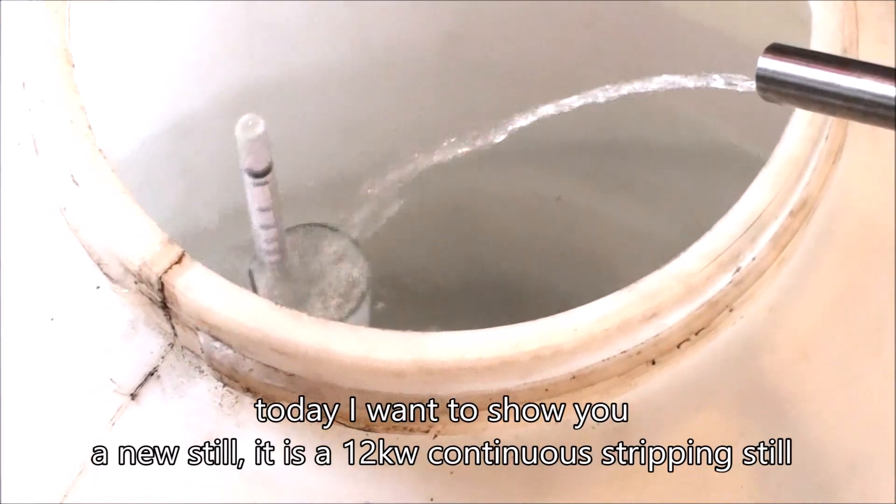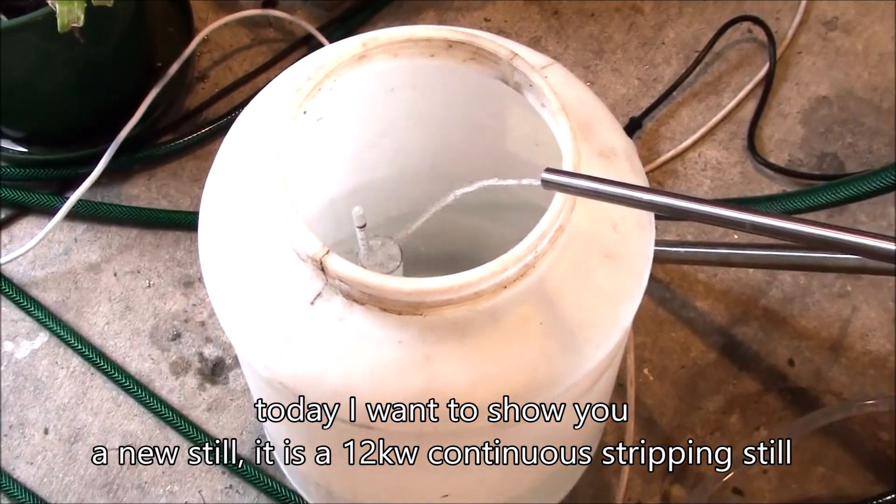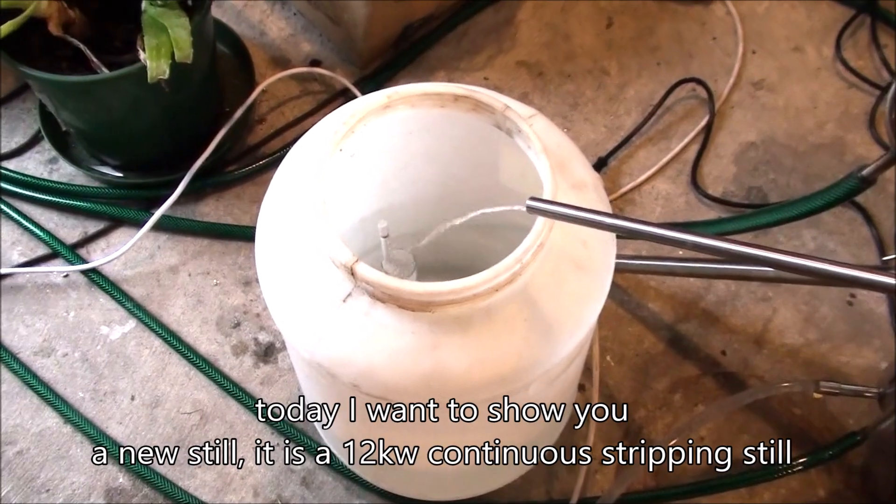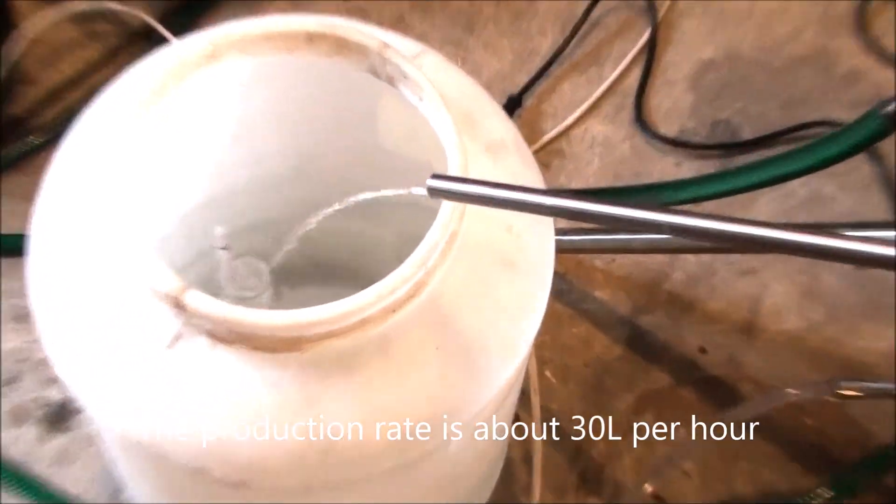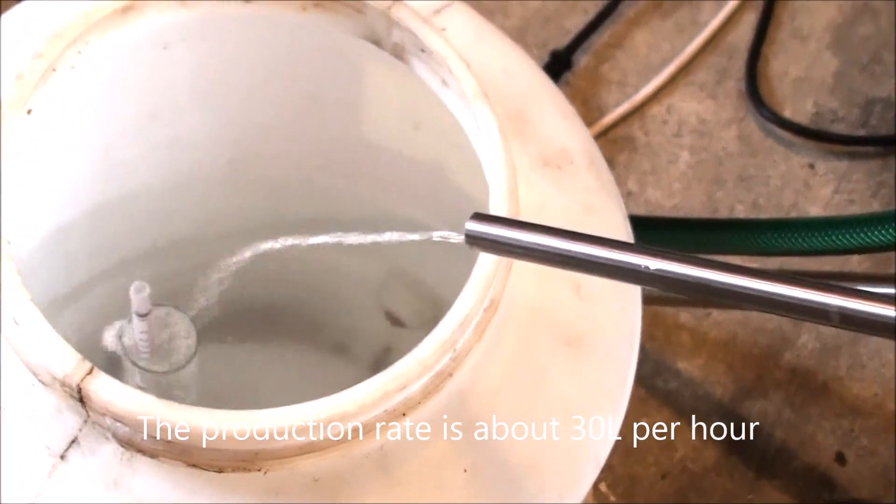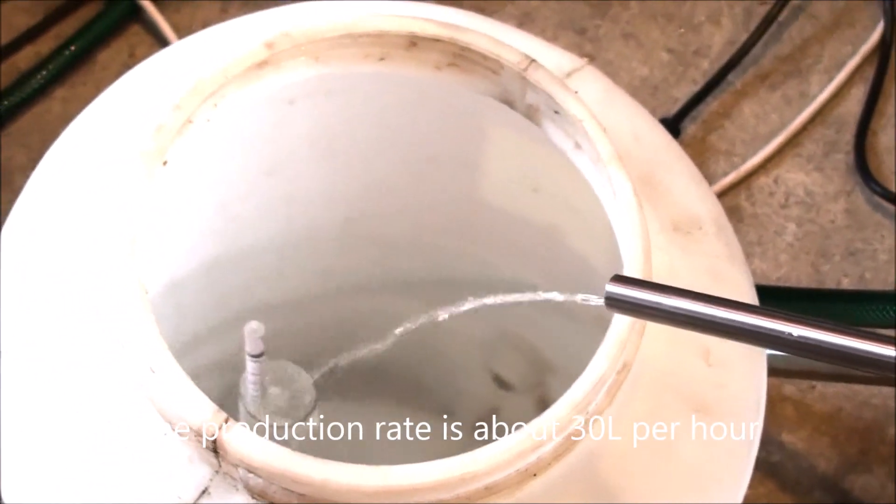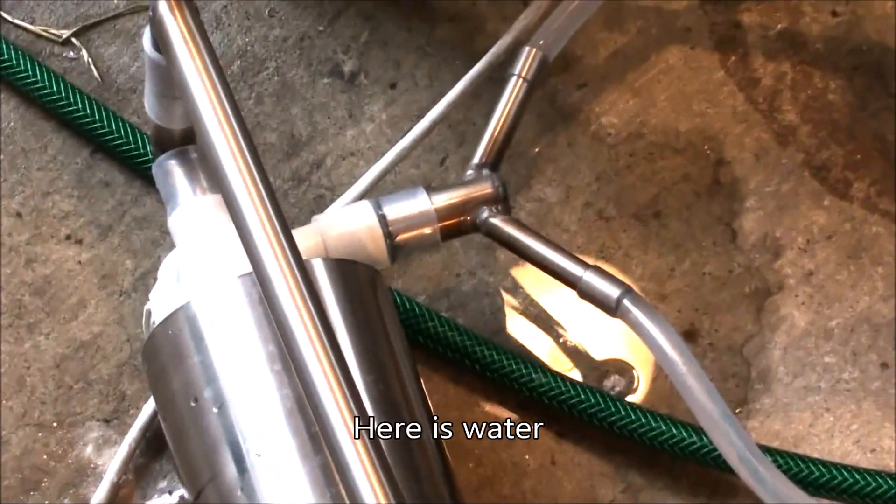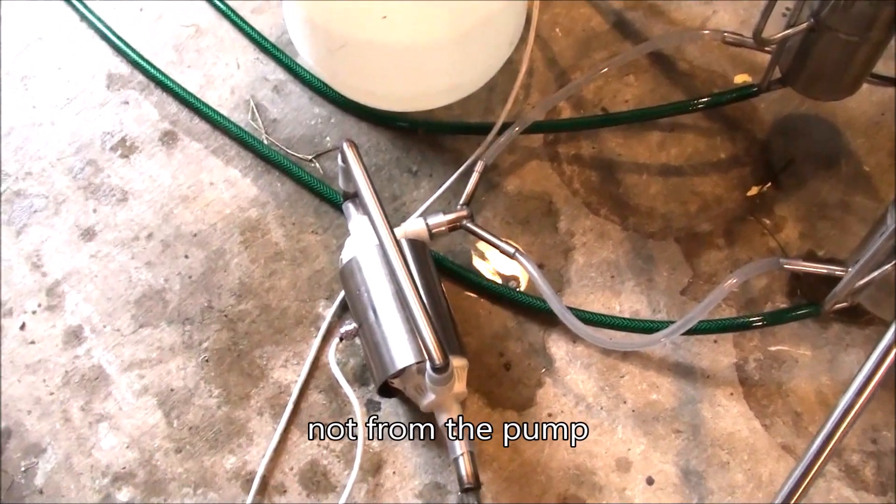Hello everyone, today I want to show you a new still - it's a 12 kilowatt continuous stripping still with a production rate of up to 30 liters per hour. Here's the pump, and here's the water connection from the pump.